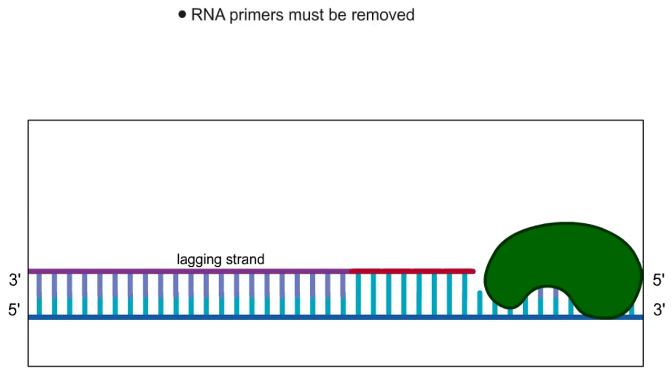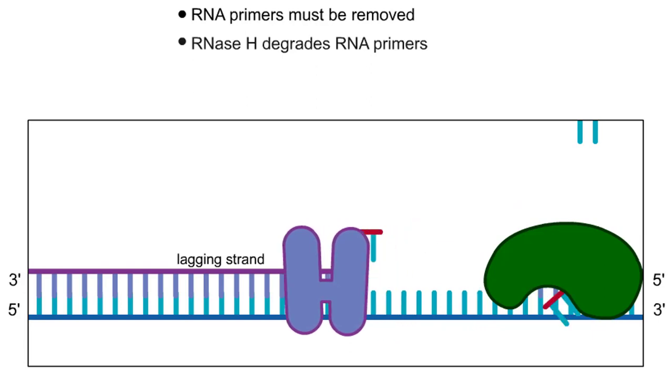The first step is the removal of the RNA primer. RNase H, which recognizes RNA-DNA hybrid helices, degrades the RNA by hydrolyzing its phosphodiester bonds.